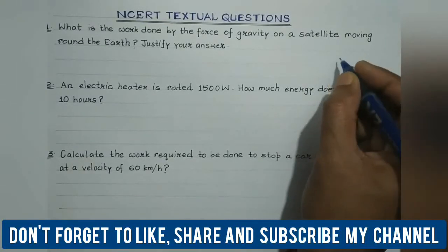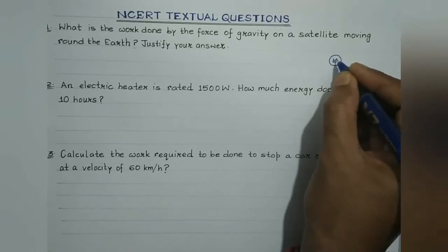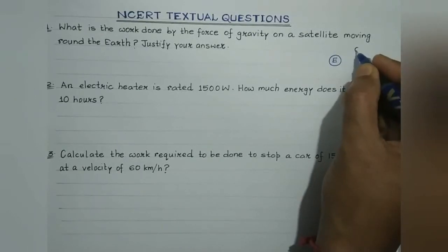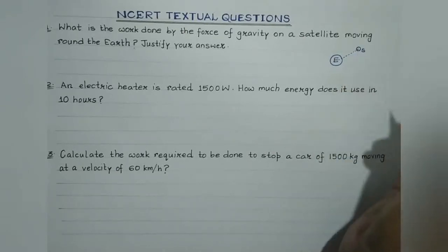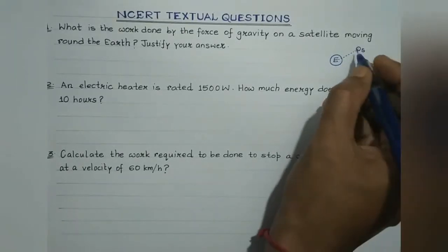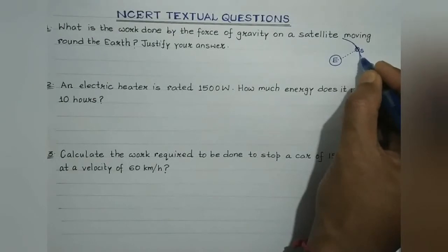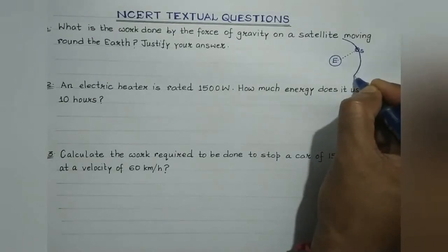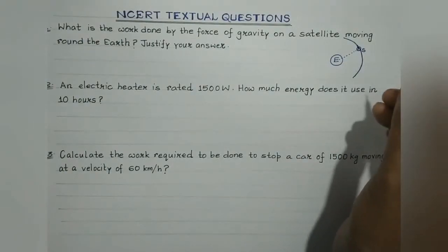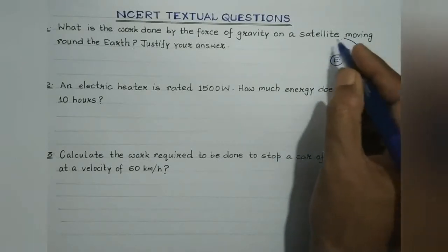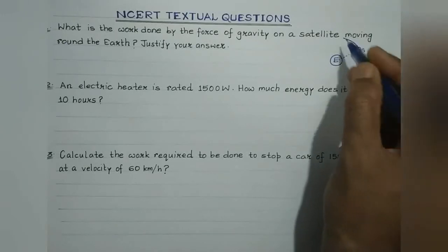Let me draw a diagram to elaborate this question. Let us consider this to be earth, represented by capital E, and this to be a satellite, represented by S, and this is the radius. A satellite revolves around the earth in a circular orbit. When a satellite moves around the earth in a circular orbit, its displacement in a short interval is along the tangent to the circular path.